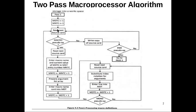After finishing with one macro definition, we read the next source program line and repeat the same steps: if it is a macro definition, store it into the macro definition table; if it is not a macro definition, copy that source program line into secondary storage for use by pass two. If we encounter the END pseudo opcode, it means it is the end of the source program, so we end the entire pass one process and move to pass two. This completes the explanation of the pass one flowchart.